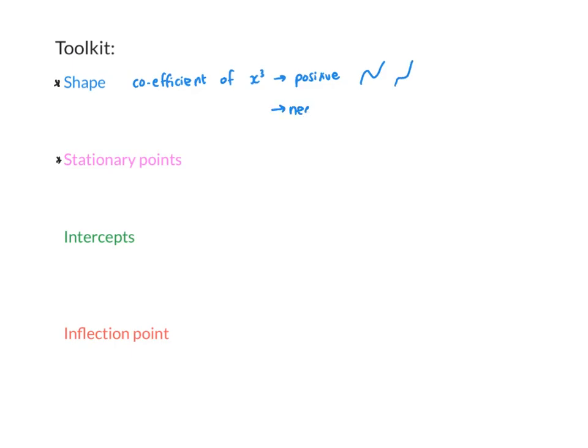If your coefficient is negative, then the graph will decrease first — either decrease, increase, decrease, or just decrease.